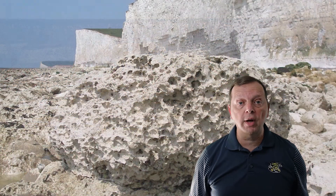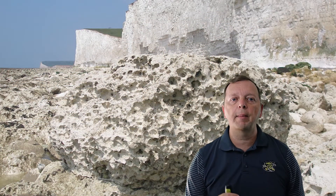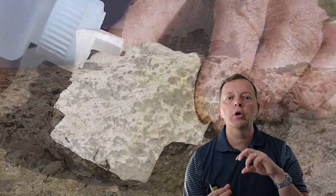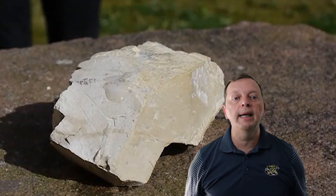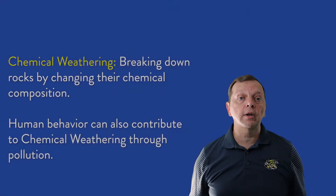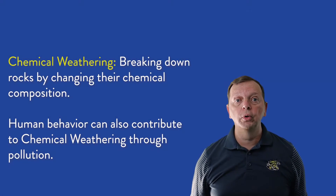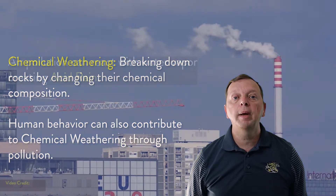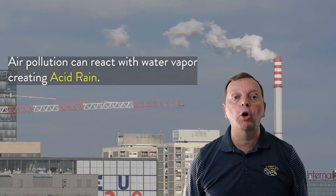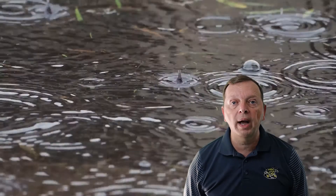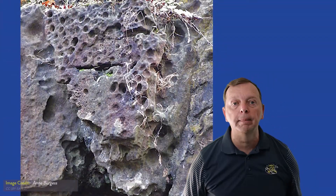Chemical weathering of limestone is also easy to see. When carbon dioxide in the atmosphere combines with water, it creates a chemical reaction with the limestone that literally eats away the rock. Human activity has also contributed to chemical weathering — air pollution may combine with water vapor in the atmosphere to create what is called acid rain. When it rains, this acid compound will eat away at rocks, such as these here in Scotland.